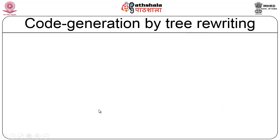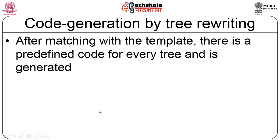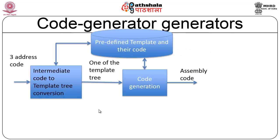After matching with the template, there is predefined code for every tree and it is generated. The flow is: input is a three address code, the intermediate code is converted to a template tree, and that is given to the code generator. The code generator looks at this, gets a template, maps it with a database, and then generates the final code by looking it up.